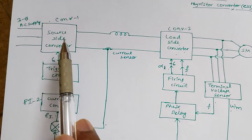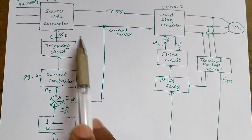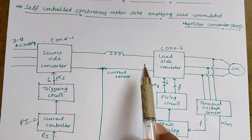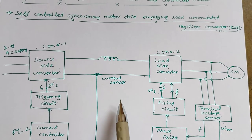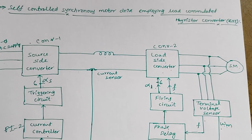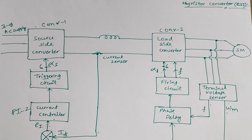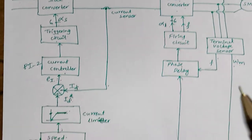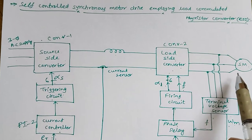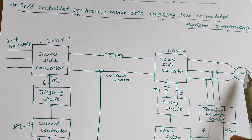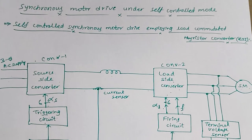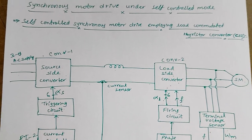In this closed loop system, the inner loop is the current loop and the outer loop is the speed loop. In the self-controlled synchronous motor drive, unlike the earlier open loop mode where the reference frequency was manually set each time, in closed loop mode the frequency is automatically adjusted as per the speed requirement. The firing pulses are adjusted accordingly to achieve the required speed at the motor. This concludes the self-controlled synchronous motor drive employing the load commutated thyristor converter. Thank you all.